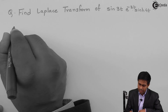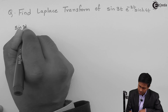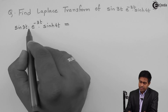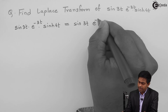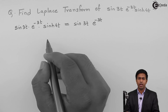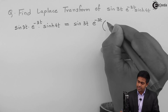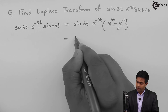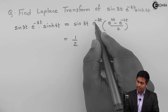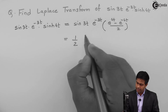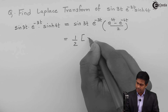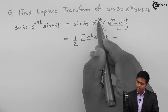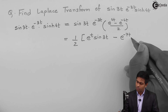Let's write down the function: sin(3t) · e^(-3t) · hyperbolic sin(4t). We keep sin(3t) and e^(-3t) as they are, and for hyperbolic sin(4t) we apply the formula: sinh(4t) = (e^(4t) - e^(-4t)) / 2. After applying this formula we get a constant 1/2 outside, and sin(3t) · e^(-3t) multiplies each term: e^(4t) · e^(-3t) = e^t, and e^(-4t) · e^(-3t) = e^(-7t).